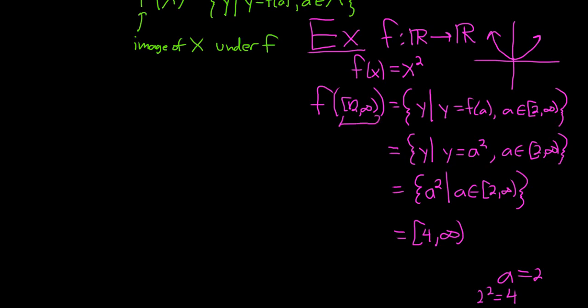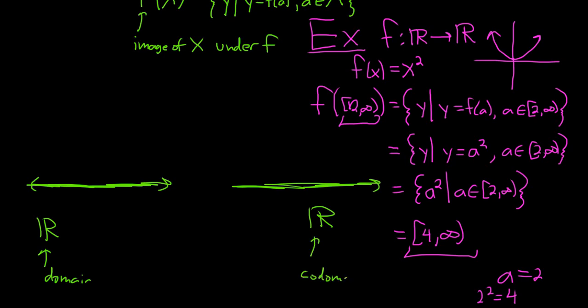So f takes this set and sends it to this set. So if you draw a picture, let's draw a picture because it could be fun. And so this is the set of real numbers here, this green line. This is R. And this is the other set of real numbers here. This is R. This is the domain. This is the codomain. And let's draw our set. This is our capital X, so it's 2 to infinity. So I'll put the 2 here. I'll use purple again. So 2 to infinity is here. And so f takes this set and sends it to 4 to infinity.